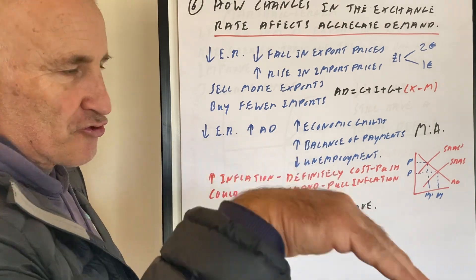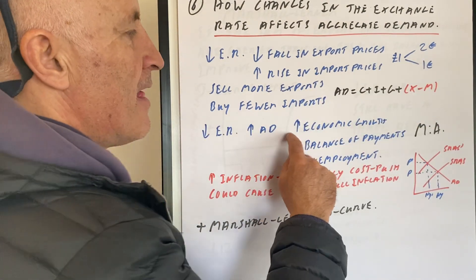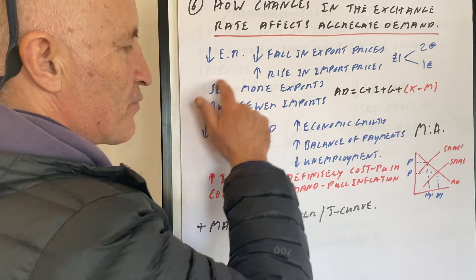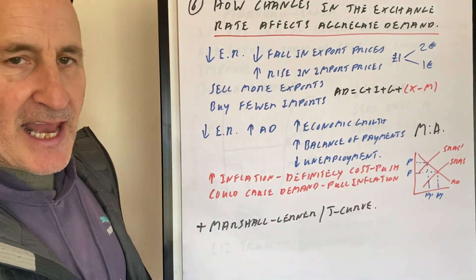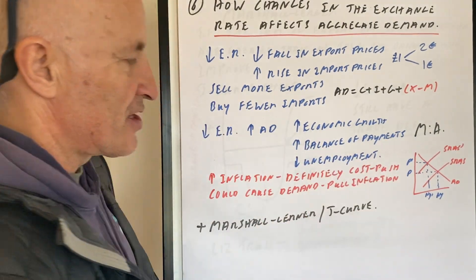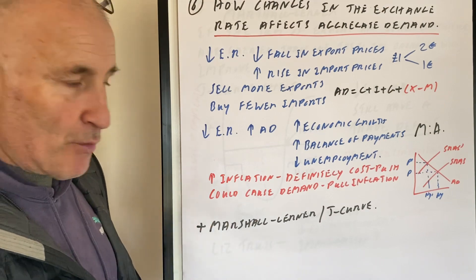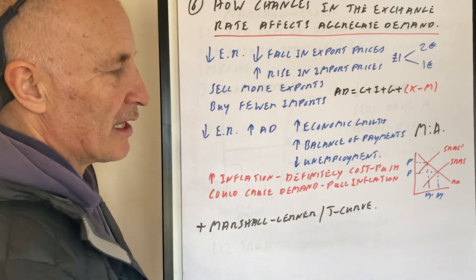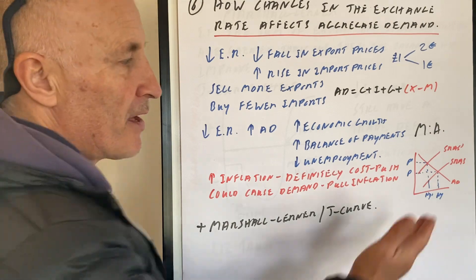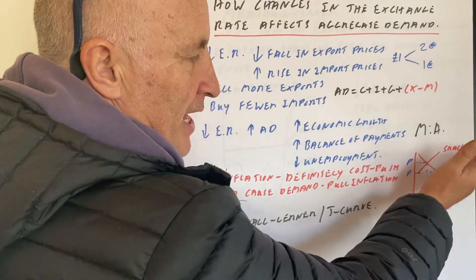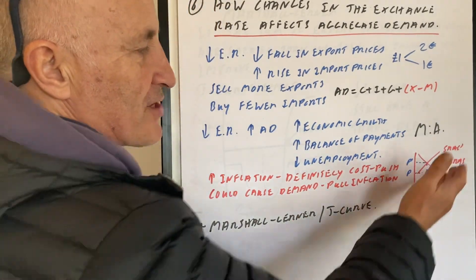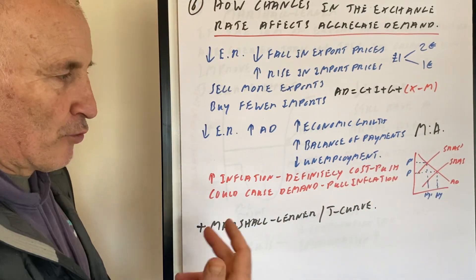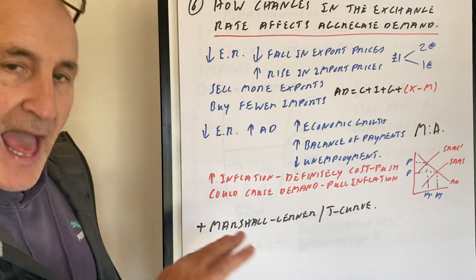On an AS-AD diagram, a lower exchange rate will lead to an increase in economic growth. Hopefully it will also improve the balance of payments and lead to a fall in unemployment. However, it will cause inflation immediately because the price of imports will go up. Therefore, the SRAS will shift from SRAS to SRAS-dash, leading to a rise in inflation.